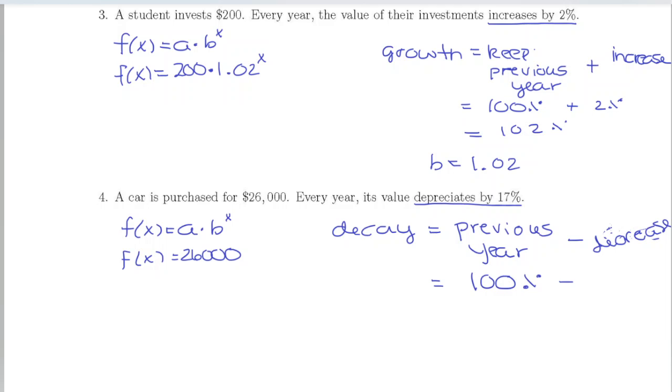We're going to take away the decrease, which is 17%, so that means we're going to be left with 83%.